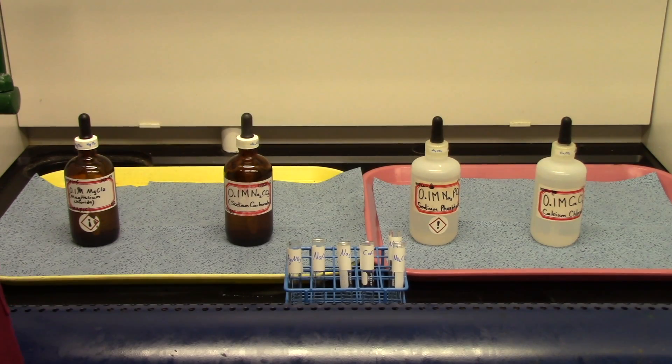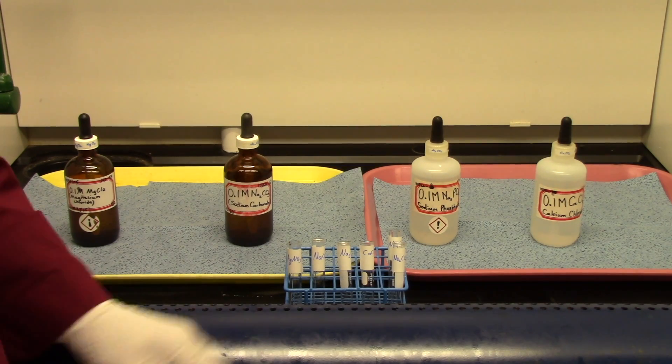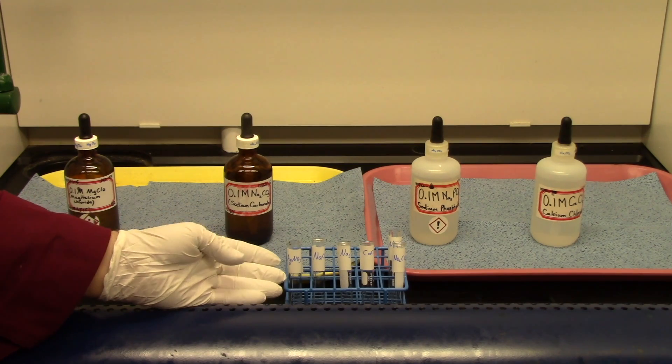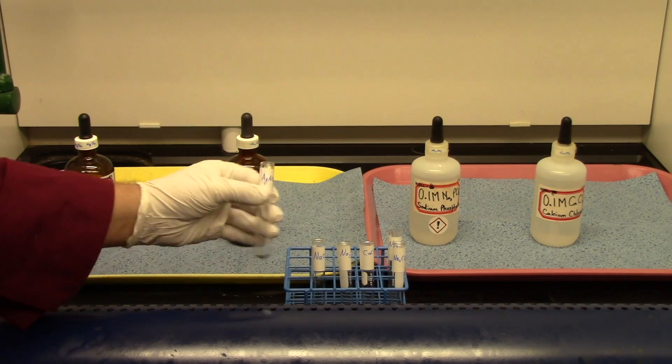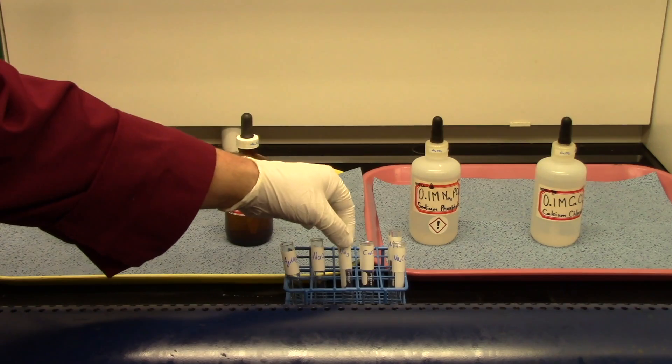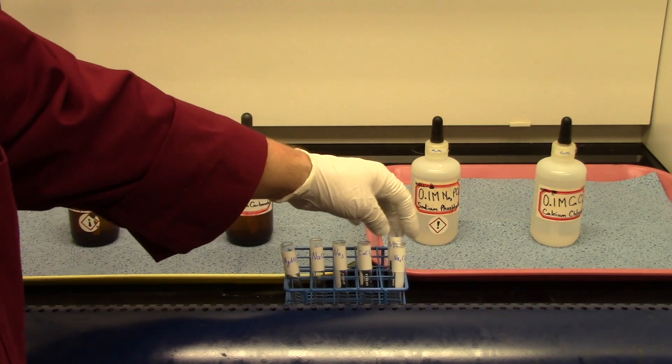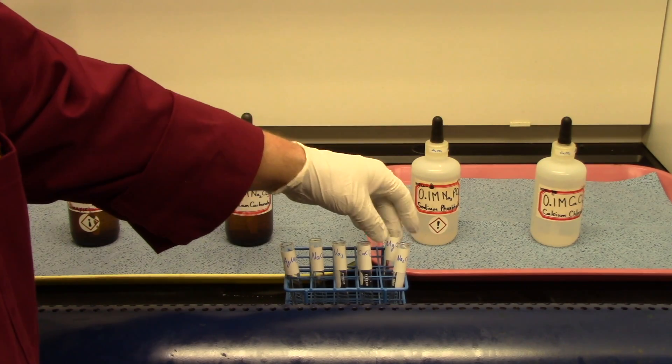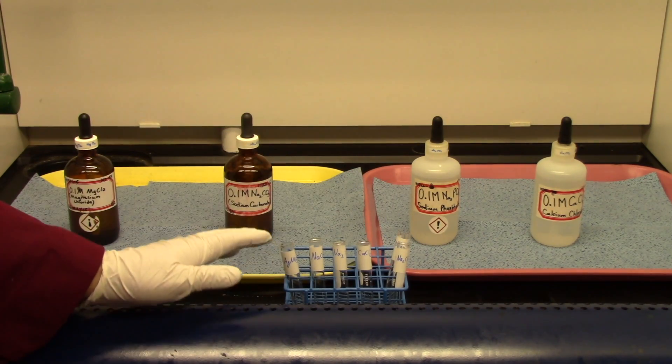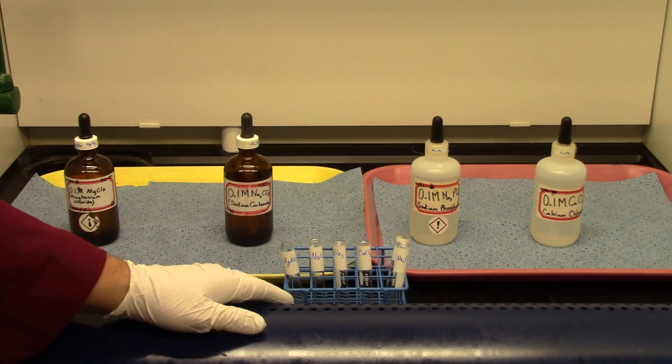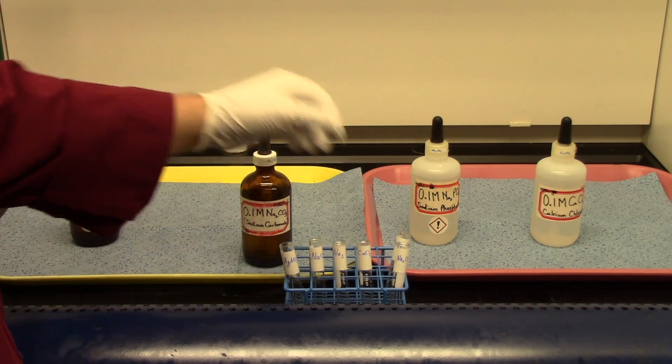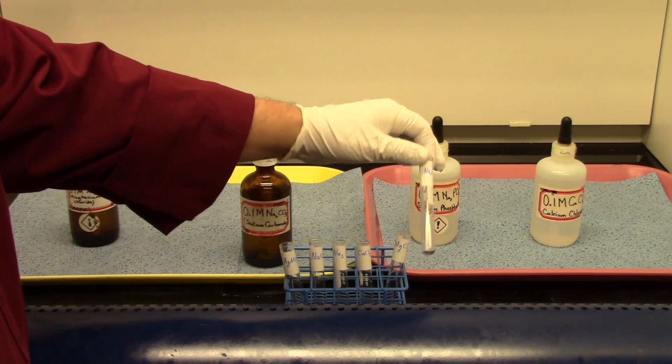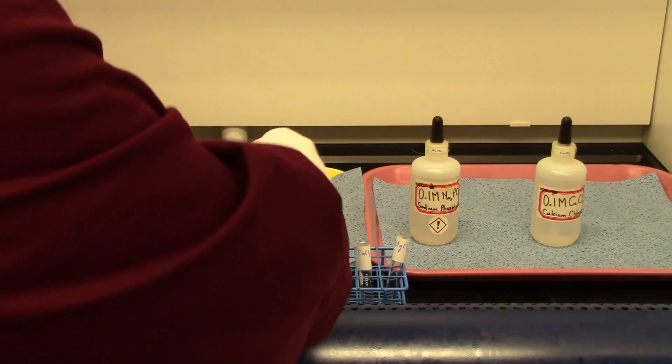Part 2 of today's experiment requires us to put about 0.5 milliliters of six different reagents into six different test tubes. I have labeled my test tubes with labeling tape and a blue marker. So this one here is sodium nitrate, sodium hydroxide, sodium phosphate, calcium chloride, sodium carbonate, and magnesium chloride. I want to be very careful to make sure that the right reagent gets into the properly labeled test tube. For example, here is a bottle of sodium carbonate. I want to take this bottle and make sure it gets into this test tube. Because this is labeled sodium carbonate.